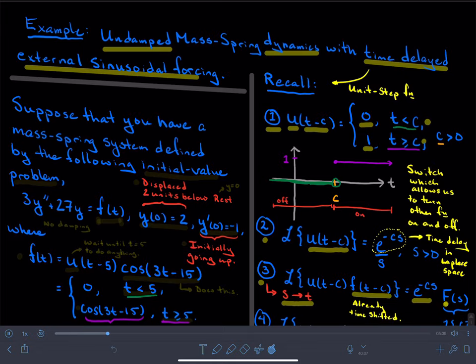What we want to talk about now is how to solve an initial value problem representing a mass-spring system where there is no damping.